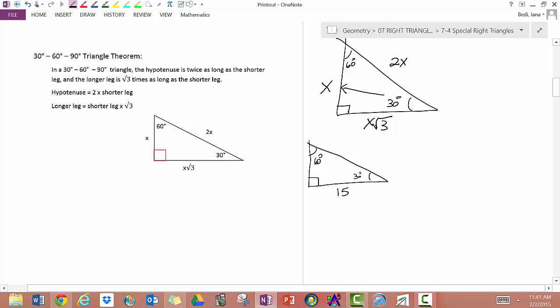This is 30 degrees. So, if this is x, then this side would be x root 3. And this would be 2x. So, I set 15 equal to x root 3.